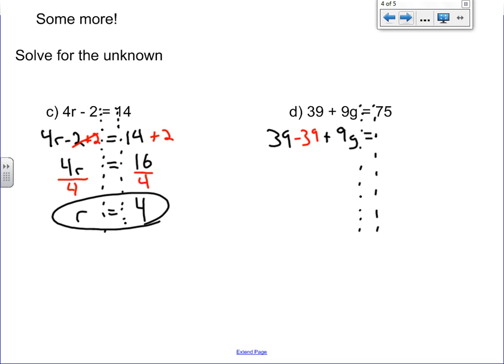Keep the equal sign. Keep the 75 but since we minus 39 on this side we've got to minus 39 on this side. Alright so we have 39 minus 39 is just 0 so we're left over with 9g, and 75 minus 39 is equal to 36.